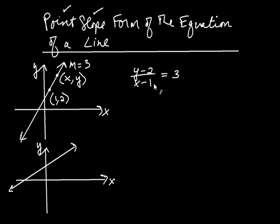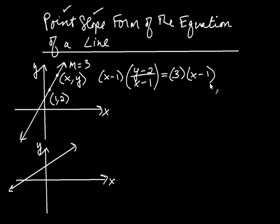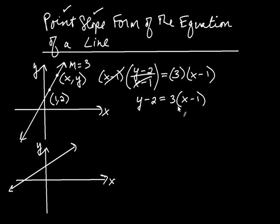This equation here — I can multiply both sides by the denominator, which is x minus 1, to clear denominators. So x minus 1 on the left and x minus 1 on the right. When I do that, the x minus 1's are going to cancel. On the left, I just have y minus 2. So it's y minus 2 equals 3 times x minus 1. This is the equation of a line.